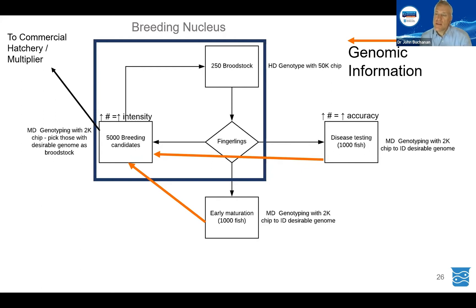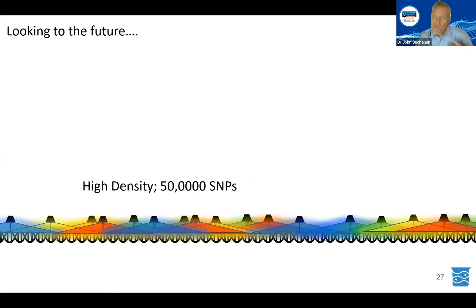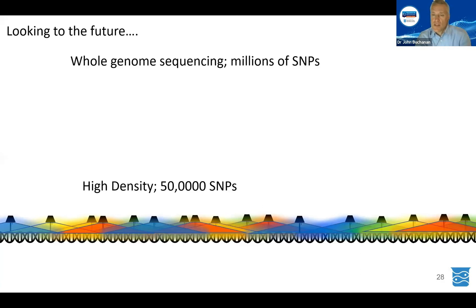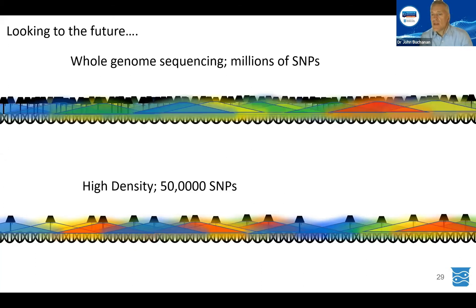There is also a medium-density panel between the 200-SNP and 50,000-SNP options. Looking further into the future, with high-density panels of 50,000 SNPs covering the entire genome, new technologies in whole genome sequencing and imputation allow you to look at millions of SNPs per individual, so the genome is covered in detail and a lot of the variation is captured in your genotyping assay.